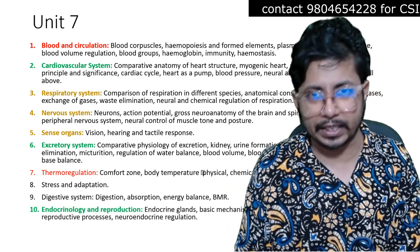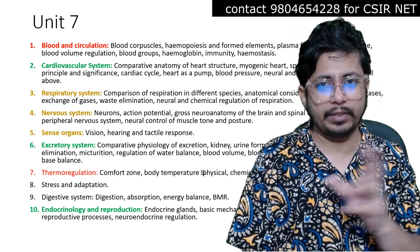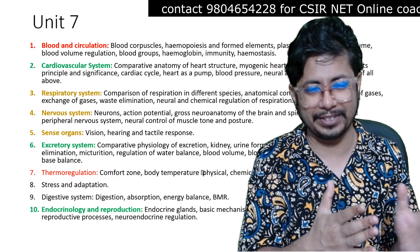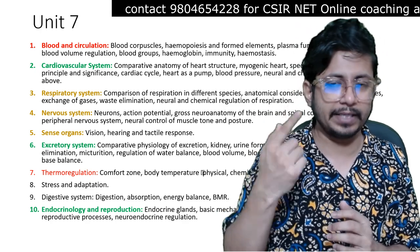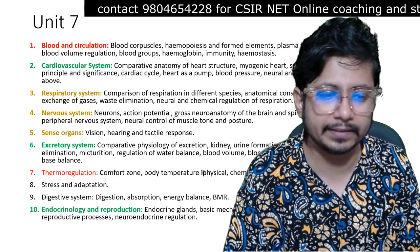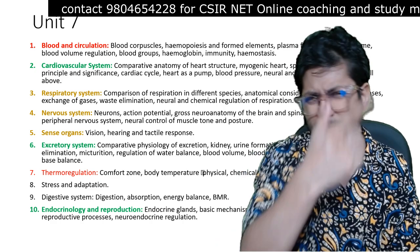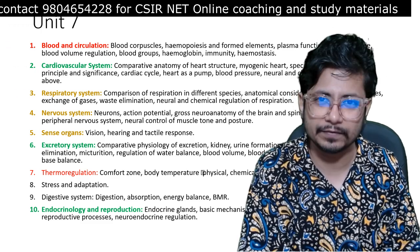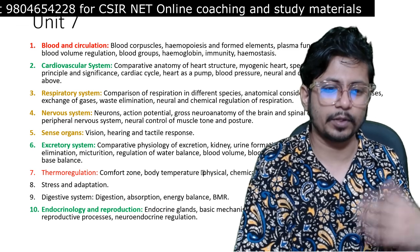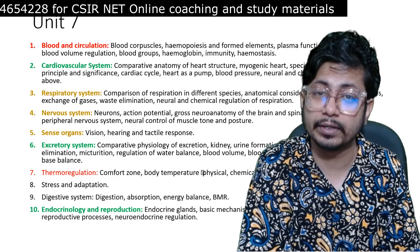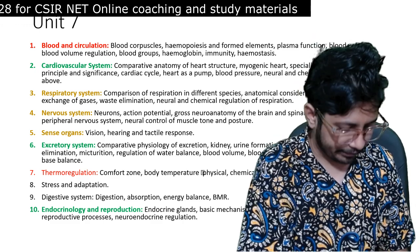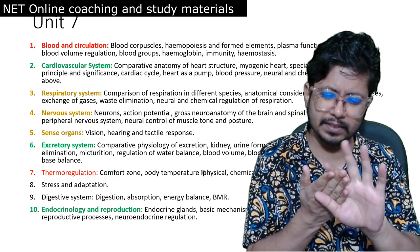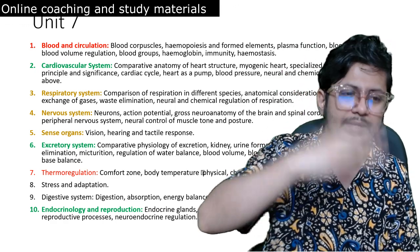Next is endocrinology and reproduction — this is also very, very important, among the most important topics. The endocrine system is something you can prepare in less time and answer most questions. Although it is memory-based, it can stick with you if you follow the mind map and mnemonic videos available. Hormone and disease, reproductive processes, and neuroendocrine regulation are all very important. So cardiovascular, excretory, endocrine, and nervous systems are the four most important systems. Rest of the systems are not that important, and the muscular system is not even in the syllabus.